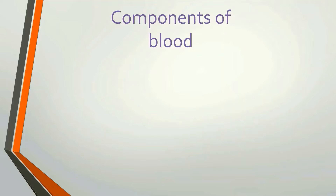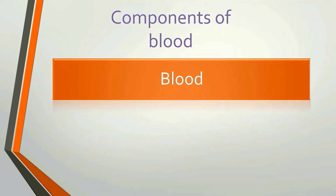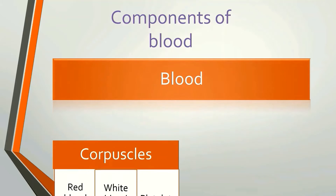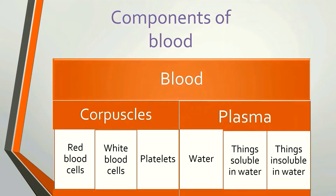We should discuss about the components of blood. Blood can be categorized into two parts: corpuscles and plasma. Corpuscles are three types: red blood cells, white blood cells, and platelets. Plasma contains water, things soluble in water, and things insoluble in water.